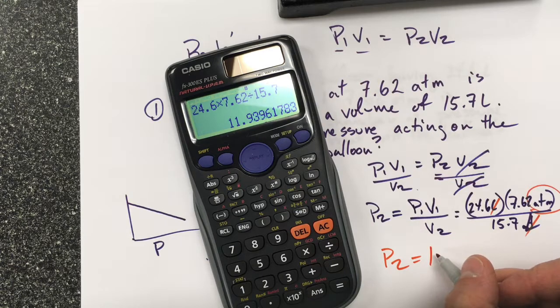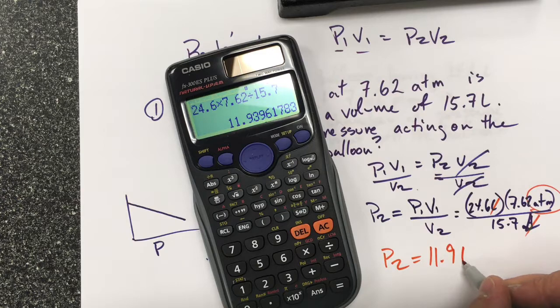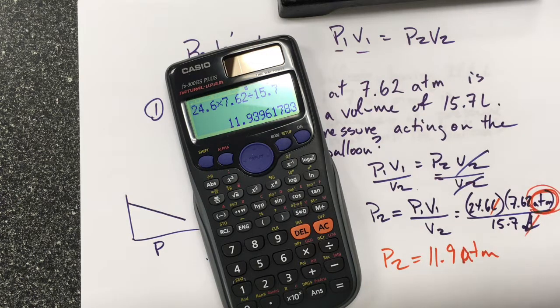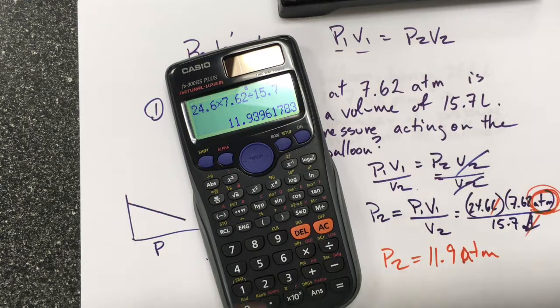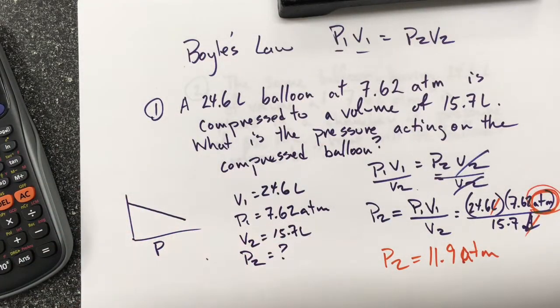Or pardon me, 11.9 liters, or atm, sorry, because this is pressure. Atm is my resulting pressure. That pressure is greater than the previous pressure, so that's an indication that it is being compressed.